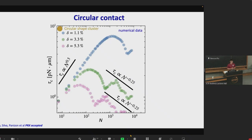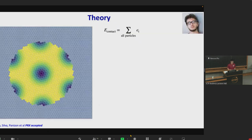Interestingly, when we go to circular-shaped clusters, we find something different. The small cluster regime agrees relatively well with the previous results, but at larger cluster sizes, the static friction torque seems to decrease with cluster size. This is a somewhat unexpected result, and we decided to construct a theory to confirm whether this is true and to understand it.